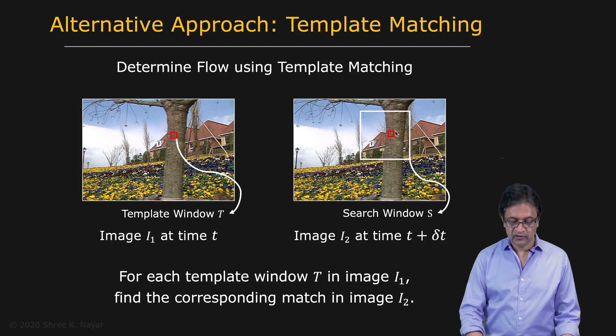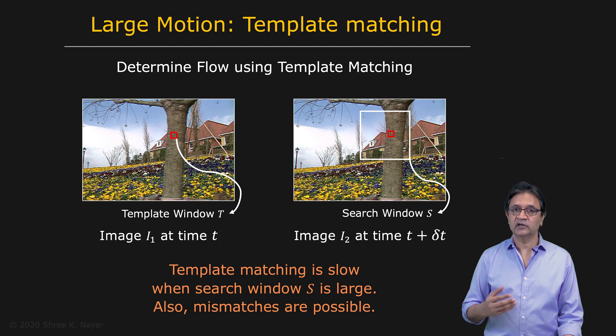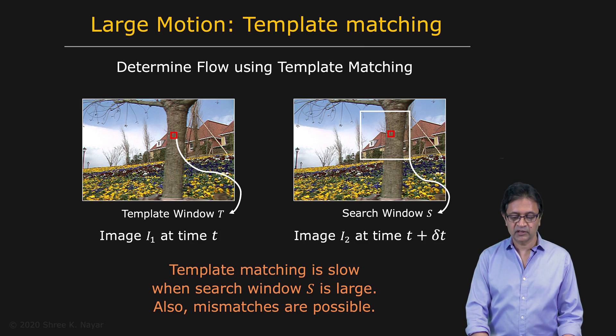Now, of course, the problem with this is that it can be very slow, especially if we're using fairly large search spaces right here. And it can be very slow because you've got to repeat this for every point, every pixel in the image.